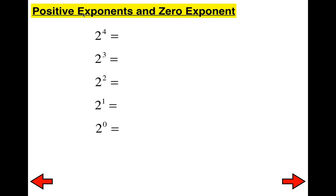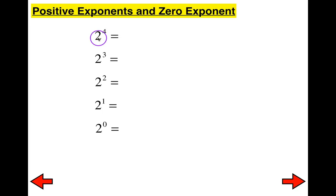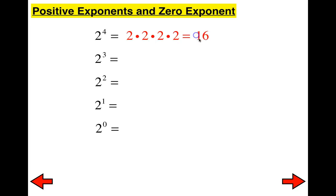The most important thing you need to understand: the large number is called the base. The base is the number that's going to be repeated. In the upper right-hand corner, the small number is the exponent. The exponent tells you how many times the base is going to be repeated. So in this case, since it's two to the fourth power, two will be repeated four times, which gives me 16.